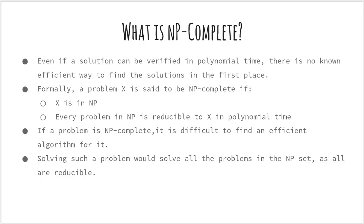Now we will talk about what NP-complete is. We believe that some problems are intrinsically unsolvable by polynomial time algorithms. Although the solutions can be verified in polynomial time, there is no known efficient way to find these solutions in the first place. Formally, a problem X is said to be NP-complete if X is in NP and every problem in NP is reducible to X in polynomial time. Discovering a problem is NP-complete indicates you will have difficulty finding an efficient algorithm for it — if you could, you would also have solved every known NP-complete problem, as all these problems are polynomially reducible to each other.